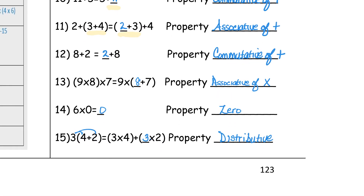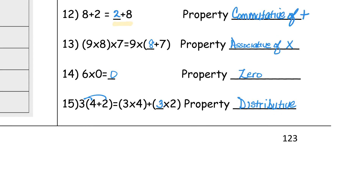Number 12, again, the commutative property of addition — the numbers change order. Number 13 is the associative property of multiplication. For number 13, that should be a multiplication sign in there, not an addition sign, so please correct that. The groups, the hangouts, change order — this should be a multiplication sign. Number 14 is something called the zero property — any number times zero is zero. And then number 15 is the distributive property.